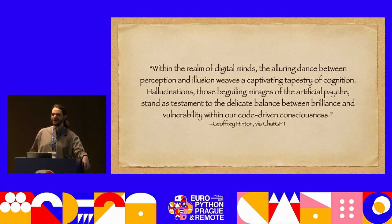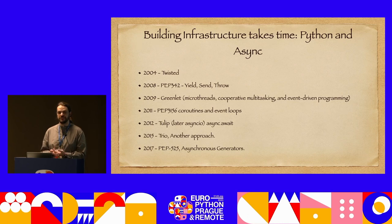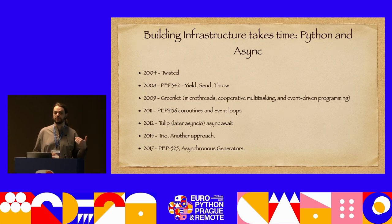Today we're talking about hallucinations, and we're going to be looking at how we can software engineer when we have tools that only tell us the truth a fraction of the time. Building infrastructure around this problem of hallucinations takes time. It's worth looking back at Python's history in order to give us a grounding for how we can ride the next wave of generative AI and shape what comes next.